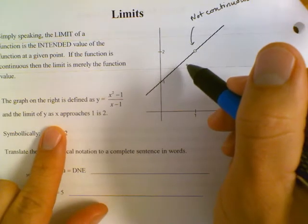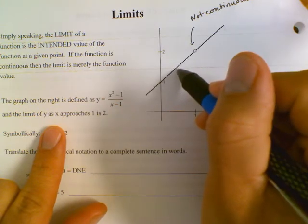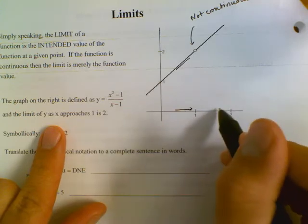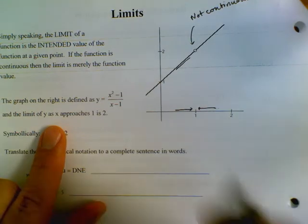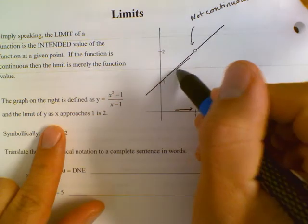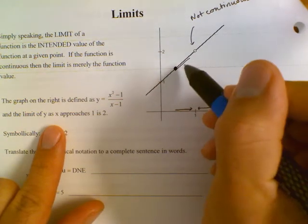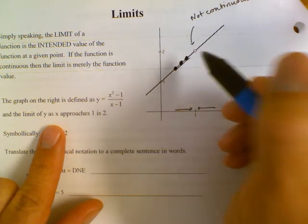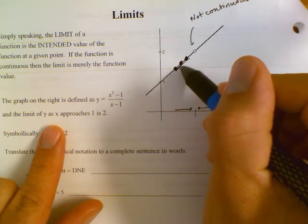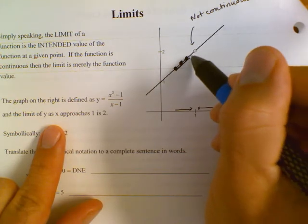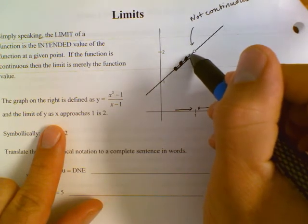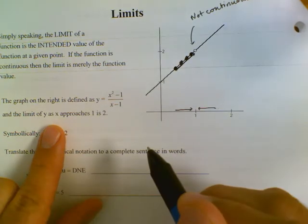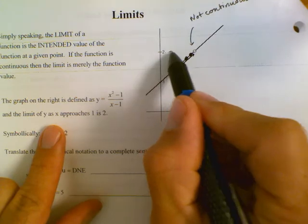So the limit of y as x values approach 1, let's determine what happens. As x values approach 1, the cursor on our calculator would be going along this curve, this y equals x squared minus 1 over x minus 1, and it would get closer and closer to the function value 2.